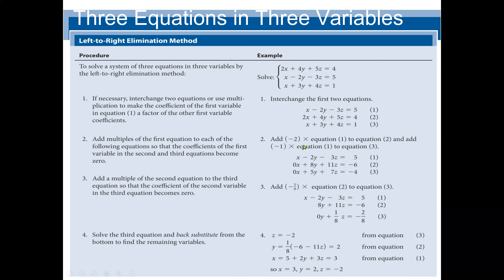We are going to interchange the first two equations, which makes it easier, because now the second equation becomes the first equation. The reason we interchange is because the coefficient of X is 1. So we have X minus 2Y minus 3Z equal to 5 as our first equation. My goal now is to eliminate X from the second and third equations. I will multiply the first equation by negative 2, combine it with the second equation to get a new second equation where X is 0. Then I will multiply the first equation by negative 1 and combine it with the third equation to get a new third equation without X.